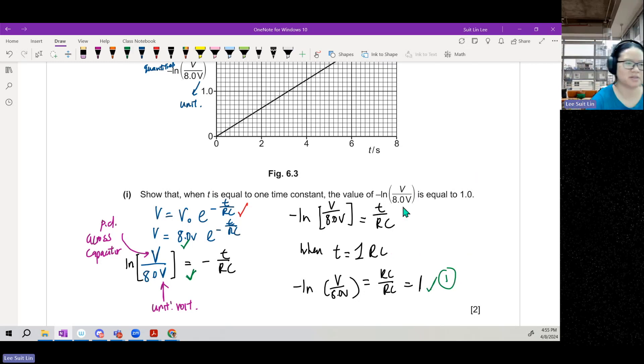So the first mark is basically V is V₀, you see all the relevant equations, you at least know them. Time constant is RC. This is the first mark. The second mark is when you start putting in values. You put 8 volts, substitute RC inside here. Two marks.